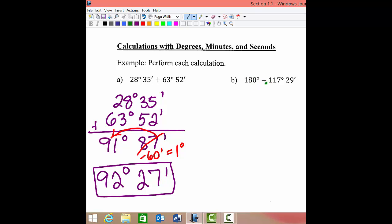Okay, let's do 180 degrees now minus 117 degrees and 29 minutes. So let's line everything up: 180 degrees minus 117 degrees and 29 minutes. It looks like here that we don't have any minutes to subtract from.